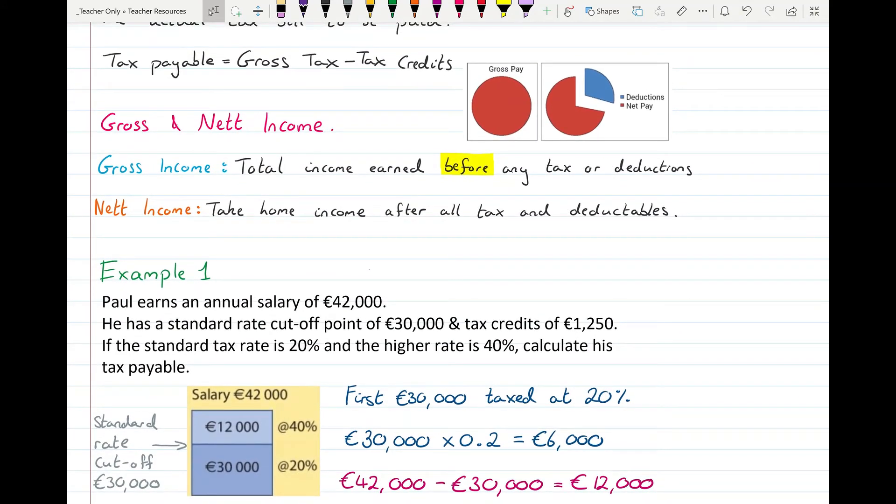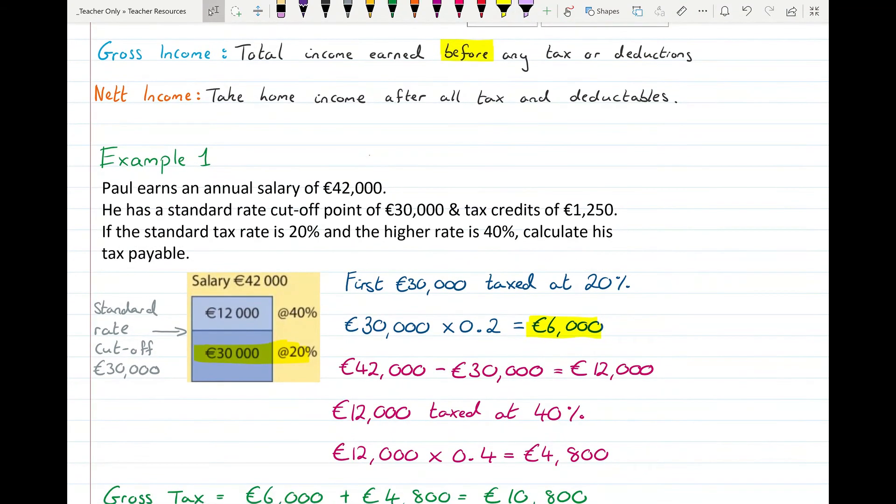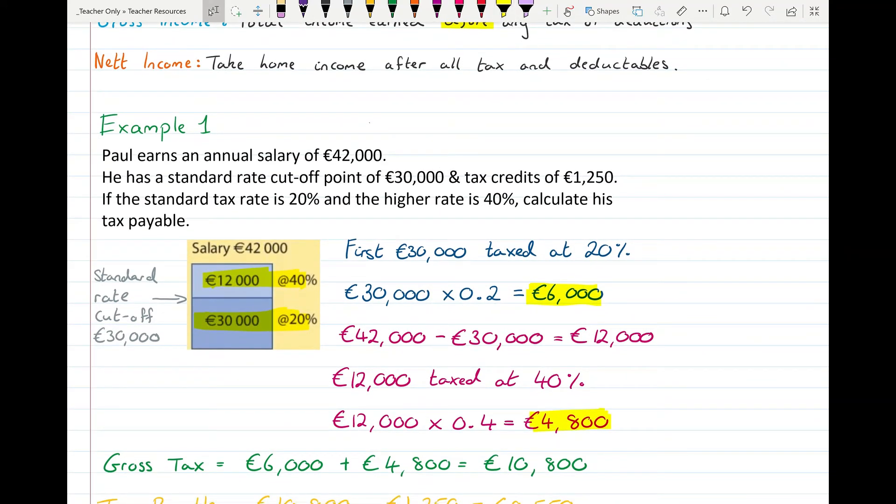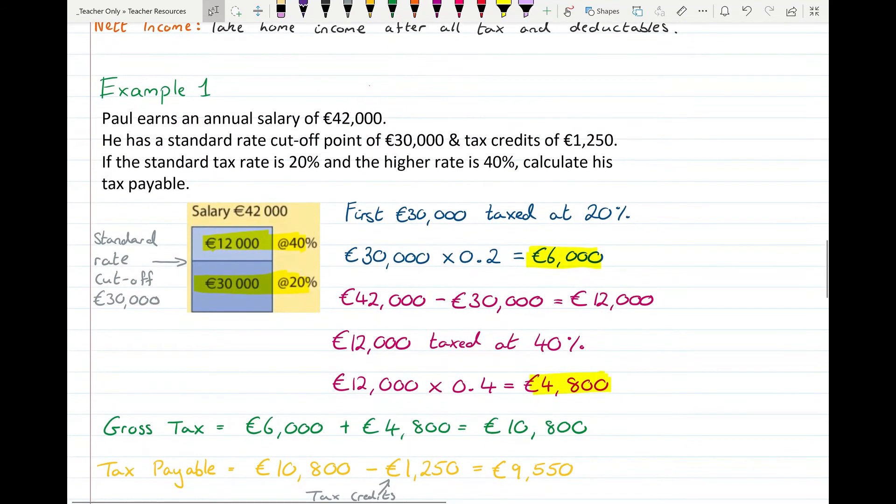His first €30,000, get 20% of that and it gives us €6,000. So he's paying €6,000 from the first €30,000. And then the €12,000 that's getting taxed at 40%, well €12,000 times 40% is €4,800. So that's how much tax he's paying for that top part. You can see how once you start earning over a certain amount, you're getting taxed quite heavily on it. Sometimes people will try and keep below that point so that they don't get taxed as much. Gross tax then, his total amount of tax payable is €6,000 plus €4,800. So the total tax bill is €10,800. But he has to apply his tax credits now. His tax credits are going to bring that amount of tax down, so he doesn't have to pay the full €10,800. And he has €1,250 in tax credits. So we take that away from the gross tax.